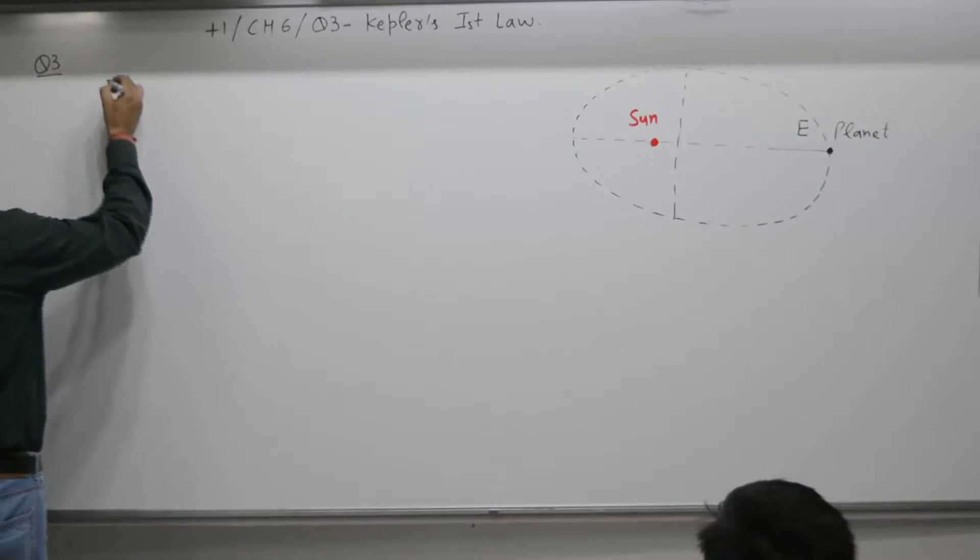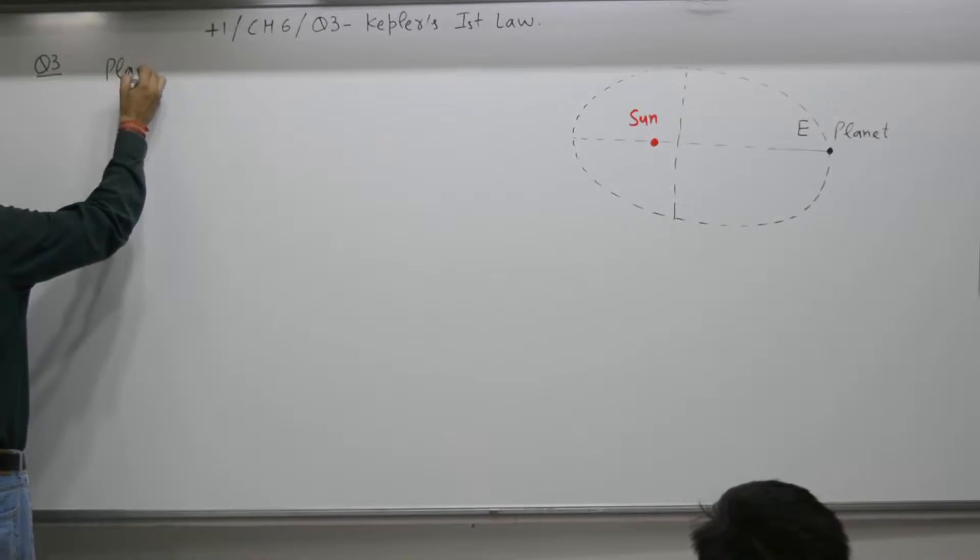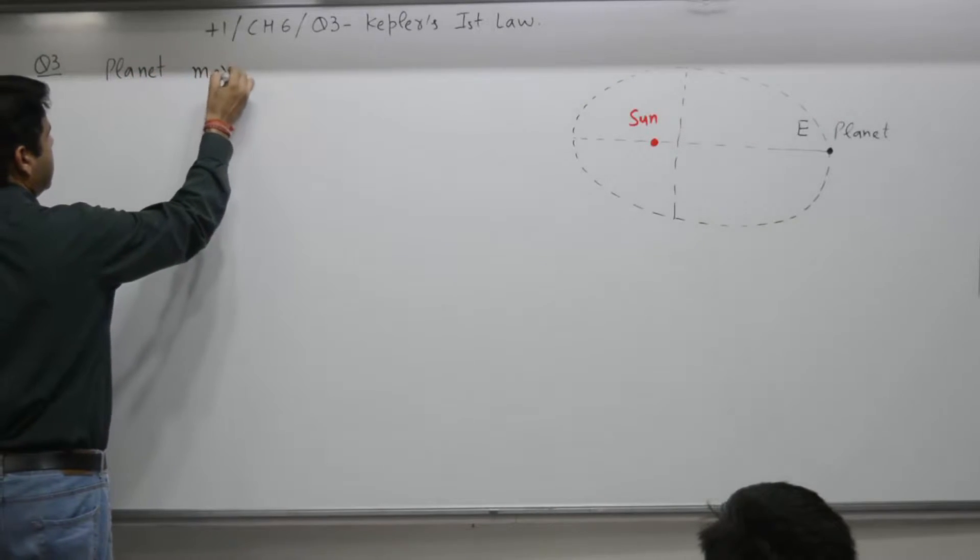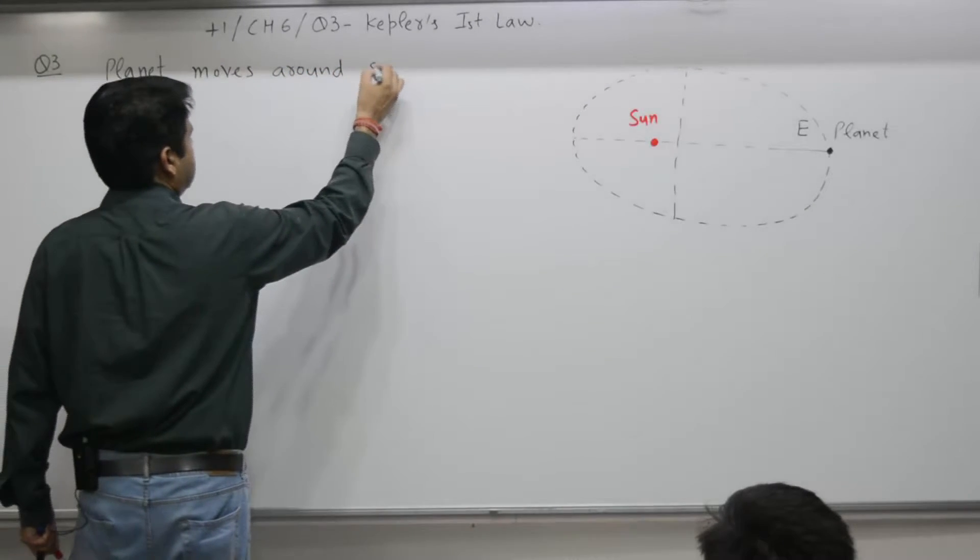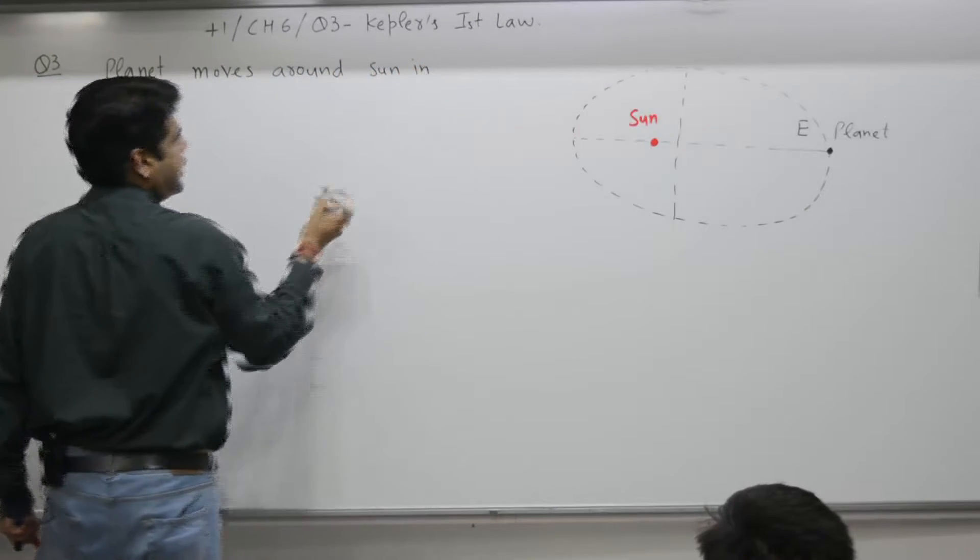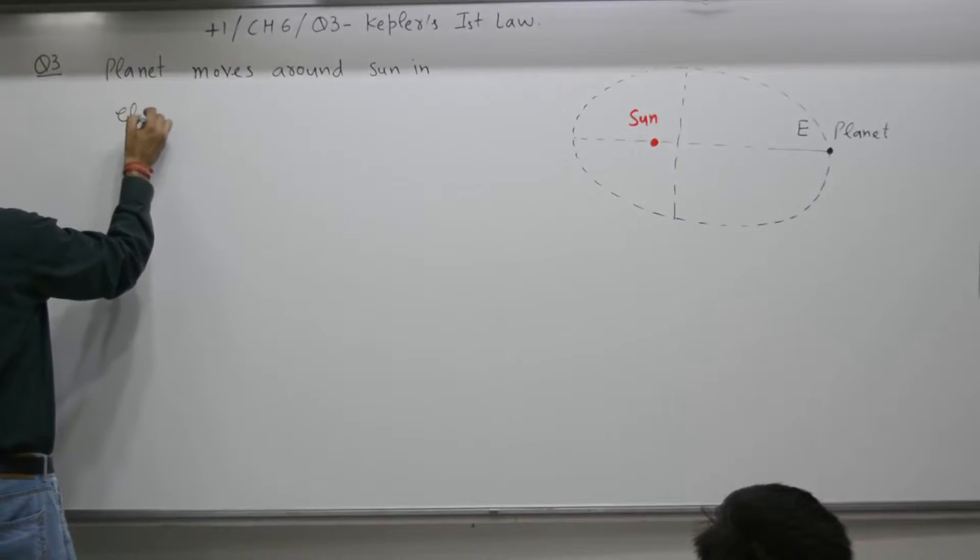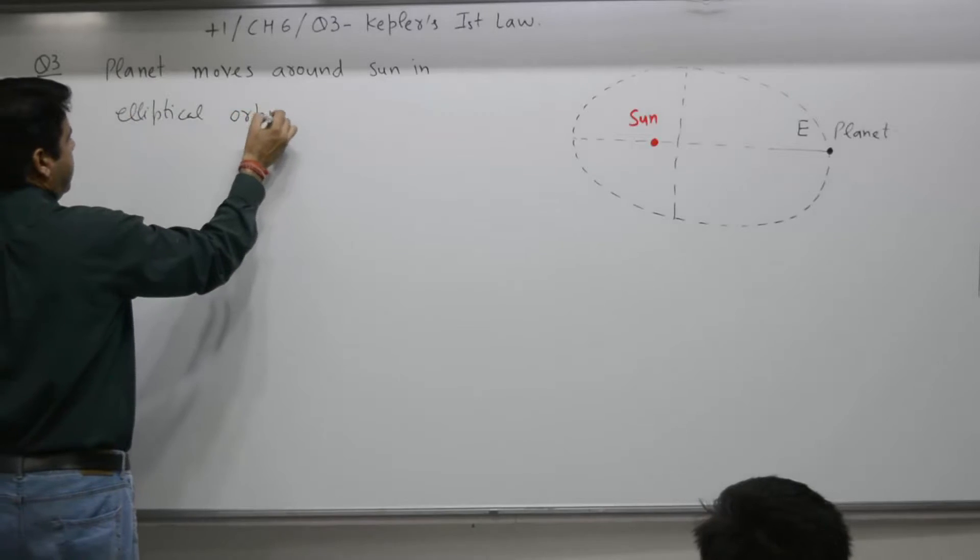So the law is: all planets move around the sun in elliptical orbits.